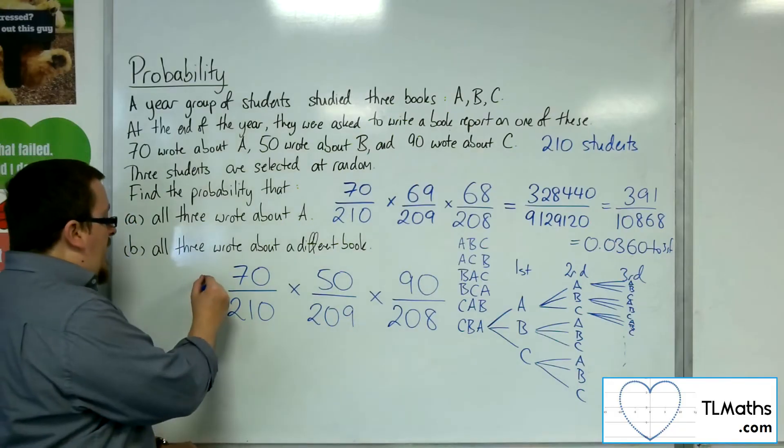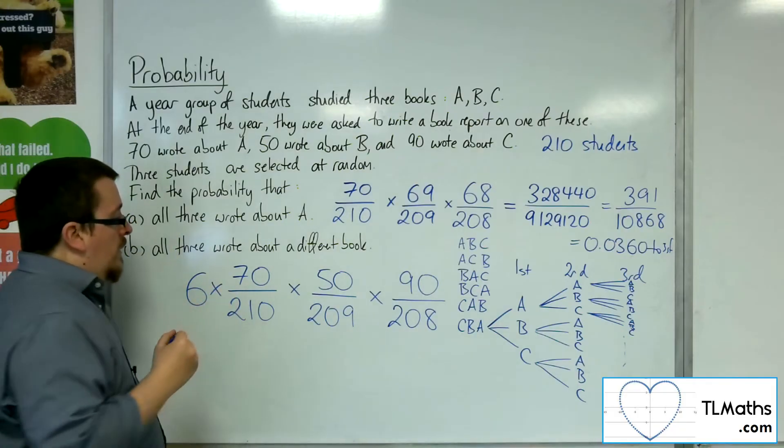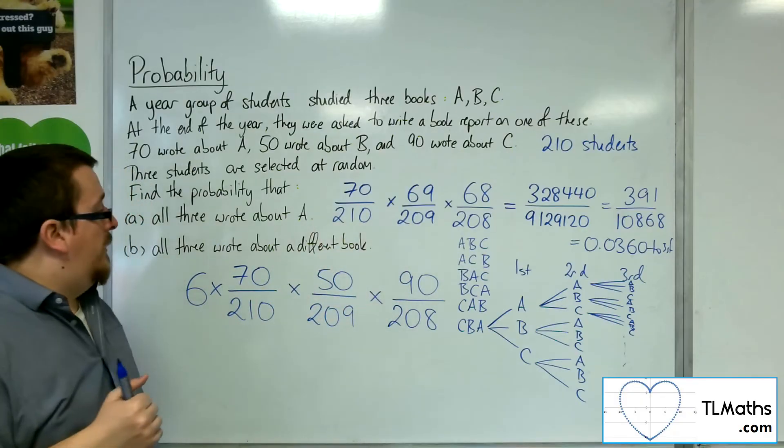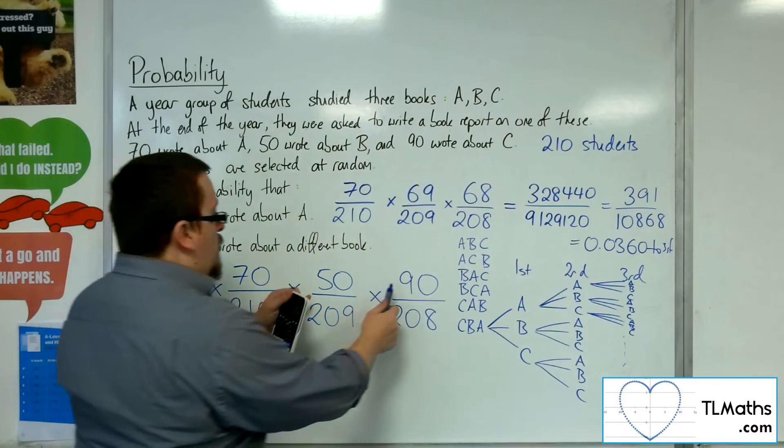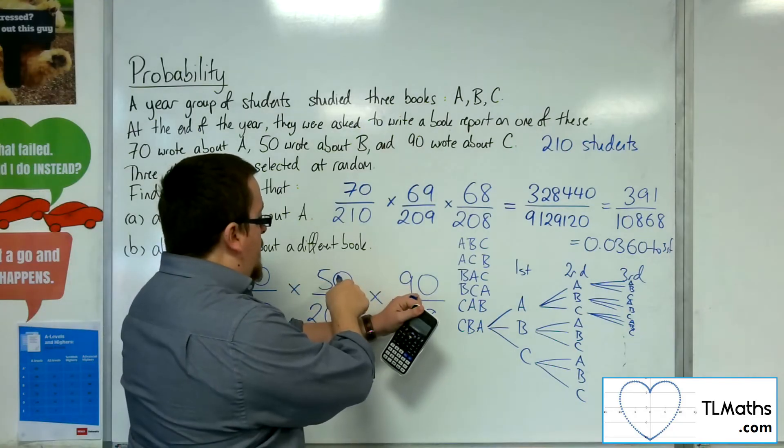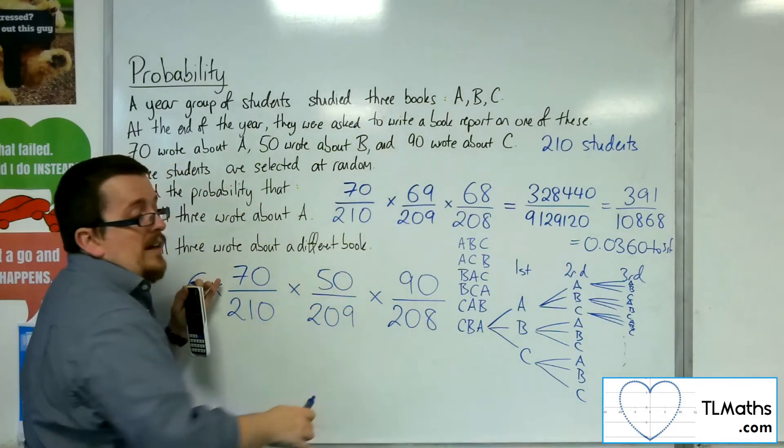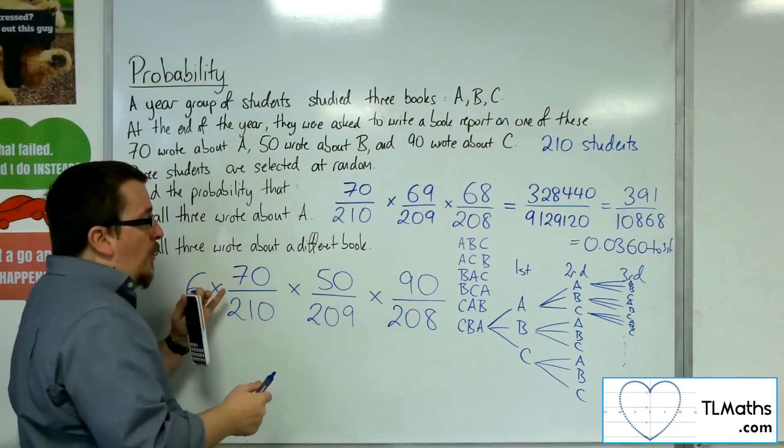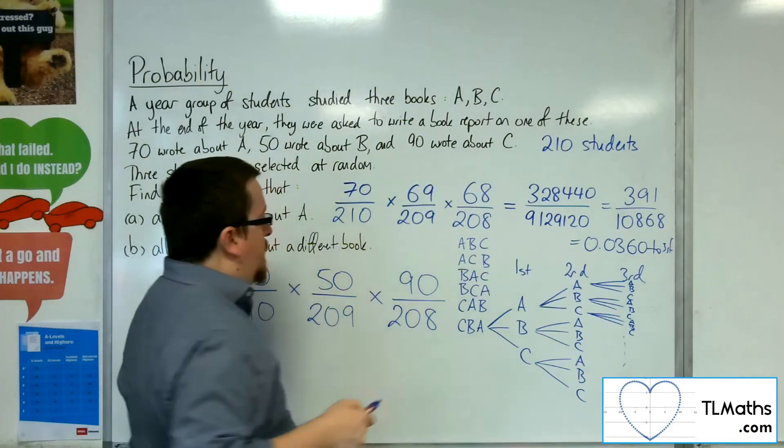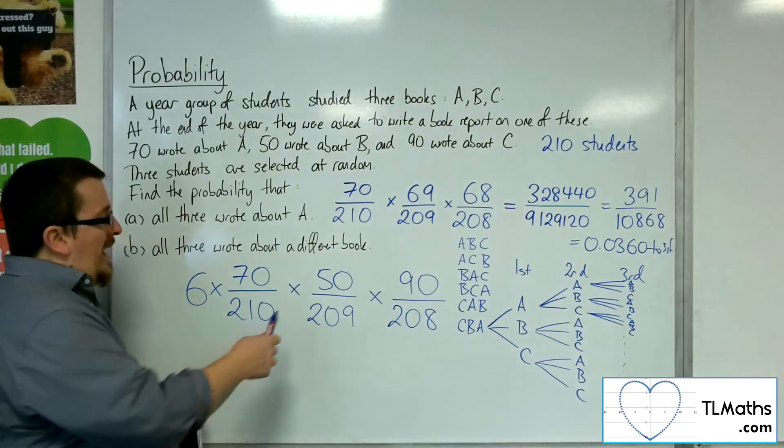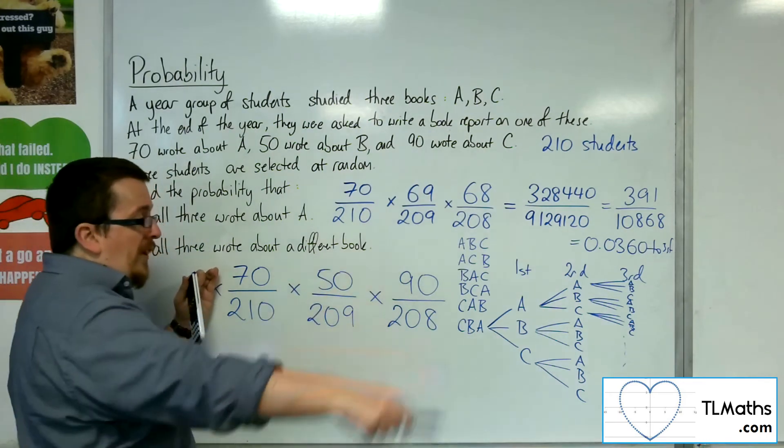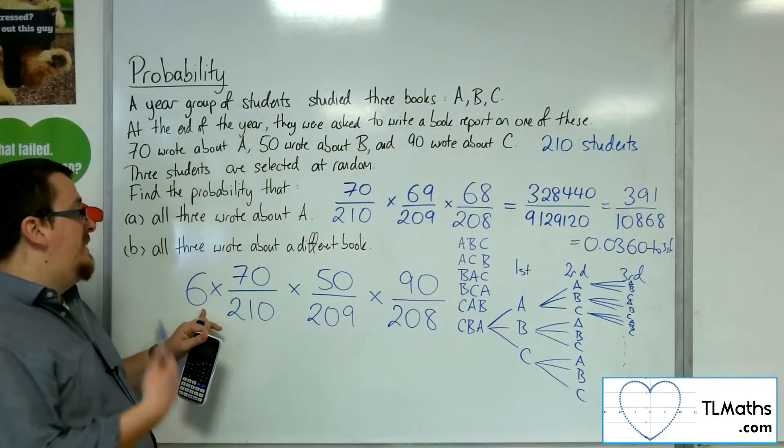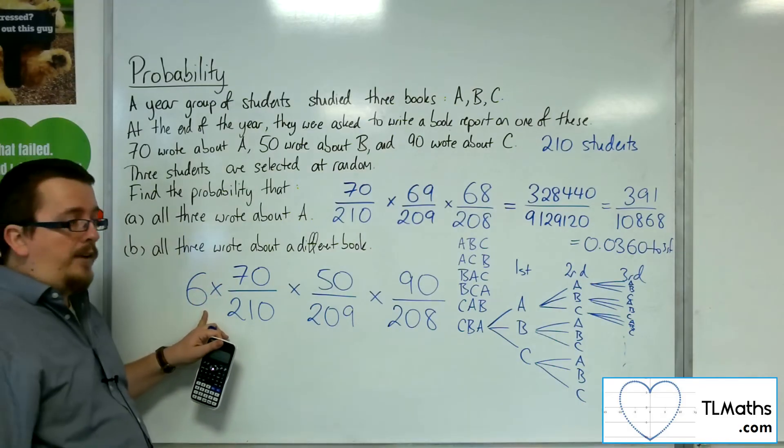There are six different ways of going through this process. If I just reverse the 50 and the 90, I still get exactly the same probability. This probability is not going to change if I just change two of the numerators. Each of them will be the same. Each of the six routes has the same probability, but because there's six routes through, I need to multiply my answer by six.